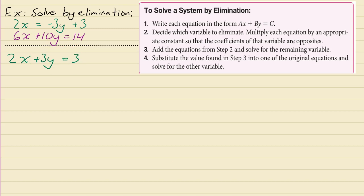You notice you don't have opposites here. You have a 6x but you don't have negative 6x, and you have a 10y but you don't have negative 10y. So if you were going to add these together, you're not going to get anything to eliminate. That's what step 2 is about: decide which variable to eliminate, then multiply each equation by an appropriate constant so that the coefficients of that variable are opposites. You could choose y or you could choose x. I'm going to choose x because all I need to do is multiply this 2x by negative 3.